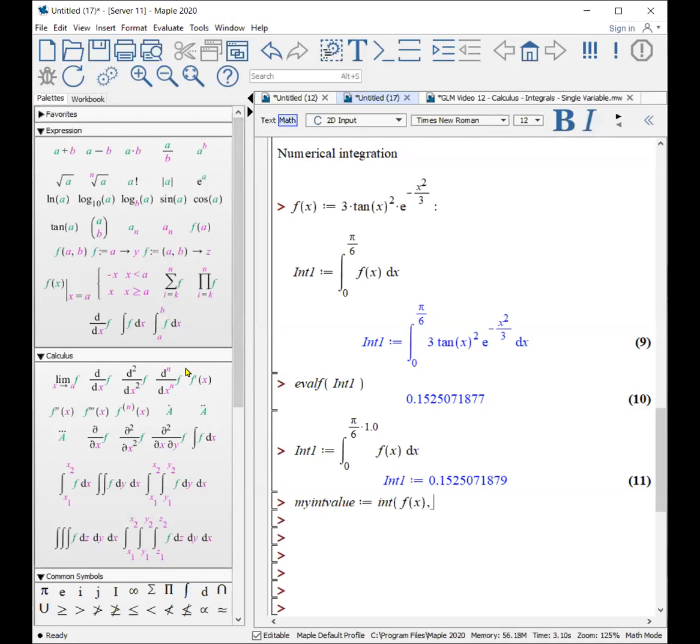Again, f of x from x equals zero to, and again, I can put in pi over six. So there's my int. And now I just simply add in the option numeric. And by doing that, it doesn't try to solve this exactly, but rather uses the floating point approximation.